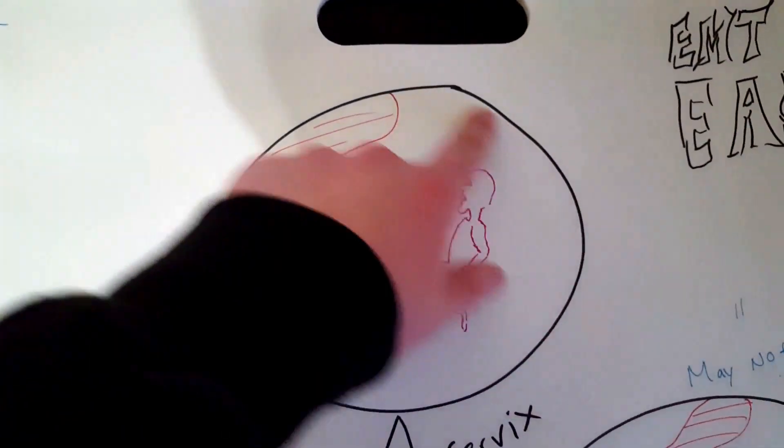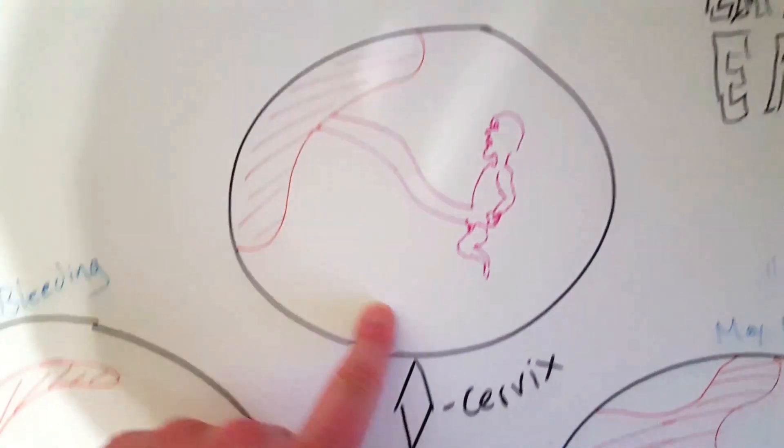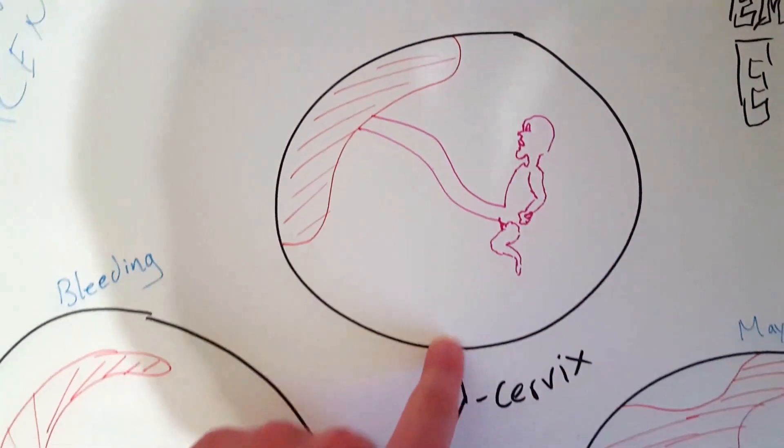So we're going to pretend that this circle right here is the uterus. This right here is the cervix, the entrance to the uterus.